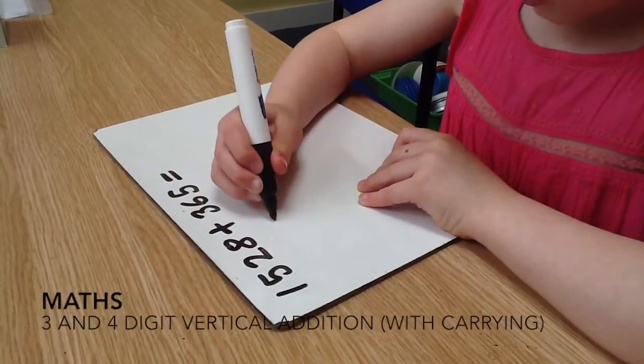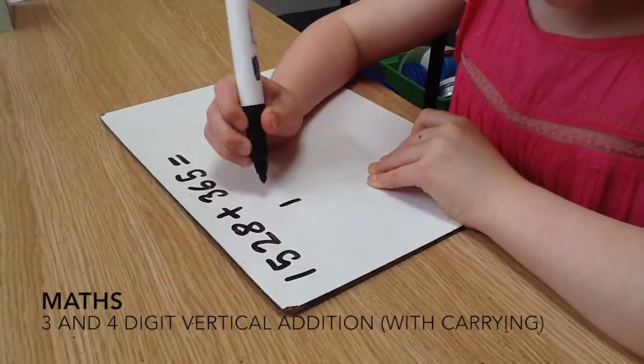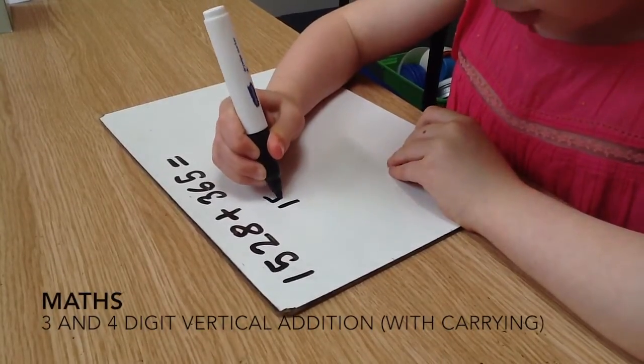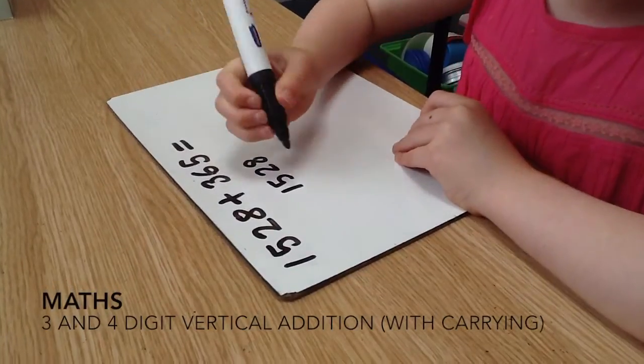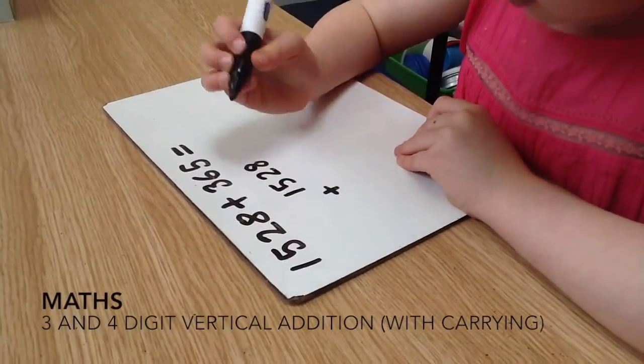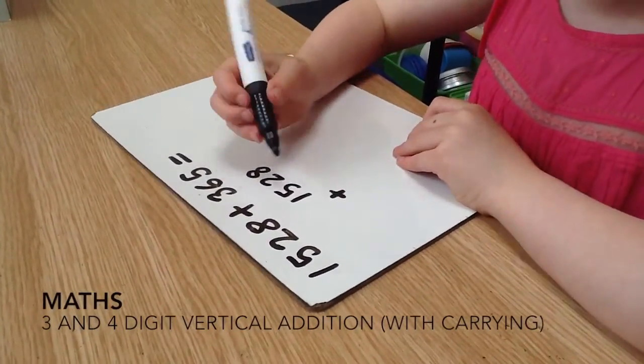What you do first is you write the biggest number which is 1528 and you put a little plus sign here and you write the smaller number underneath.